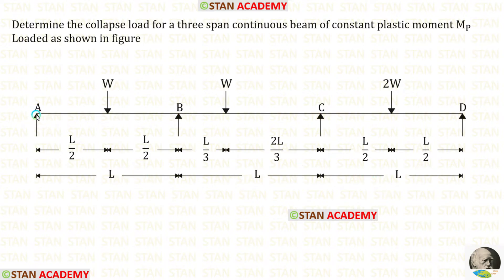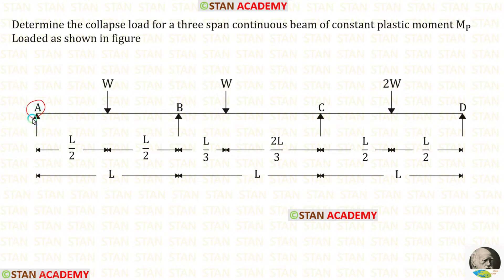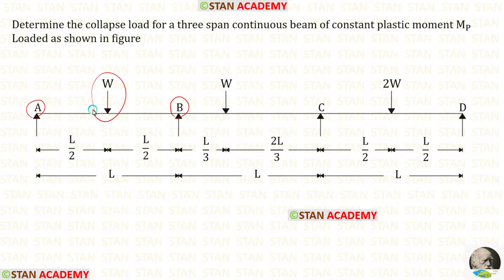First, let us take span AB. In span AB, we have a point load W in the center. In point A, there will be no plastic hinge because it is a simply supported end. In joint B, we will have a plastic hinge, and under the point load, we will have another plastic hinge. So in this span, there will be only two plastic hinges.